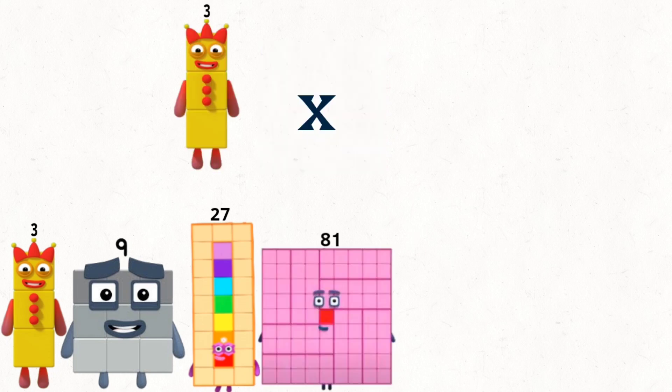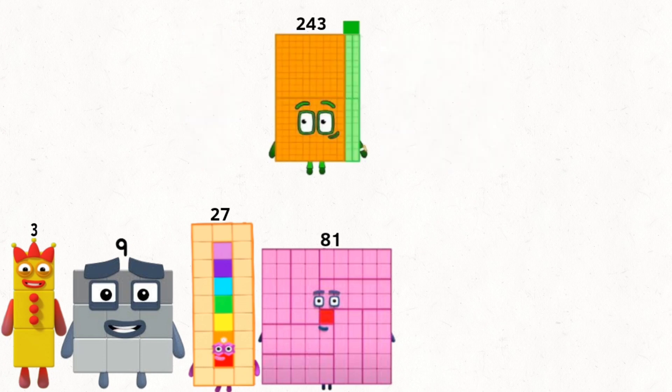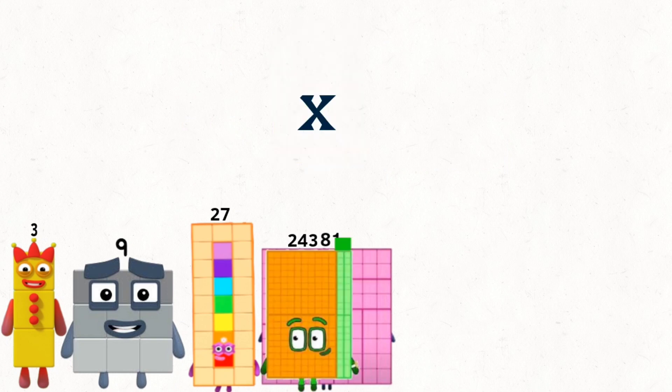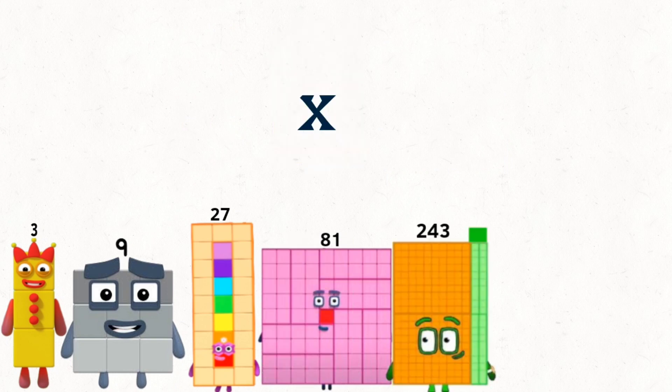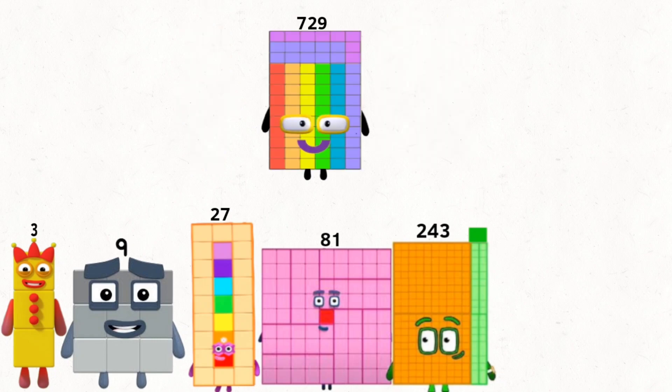3 times 81 equals 243. 3 times 243 equals 729.